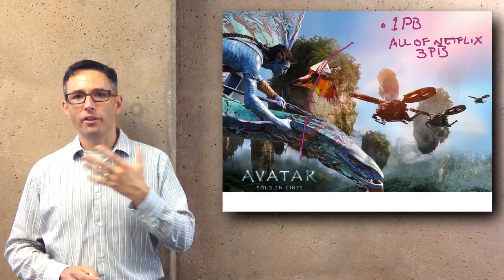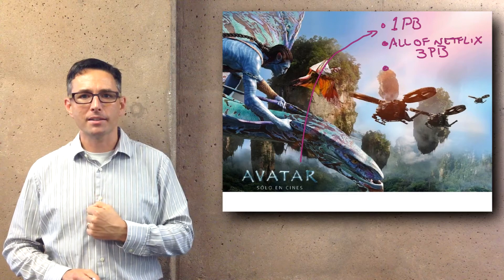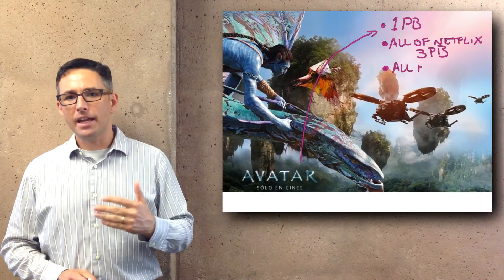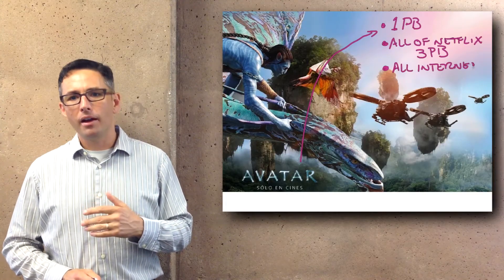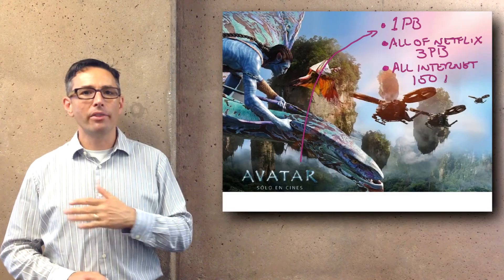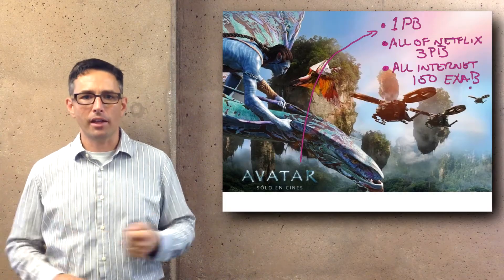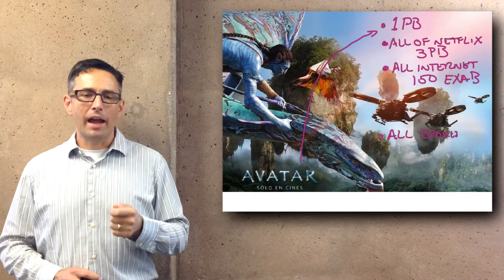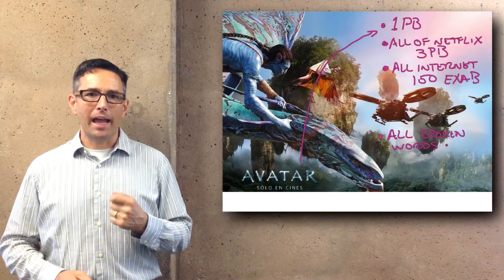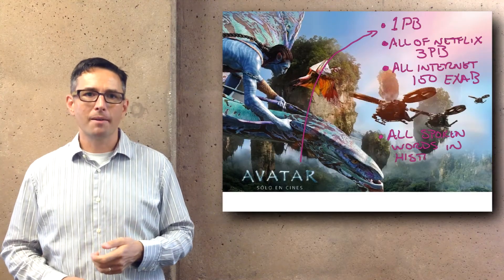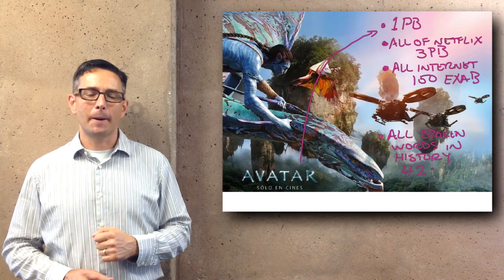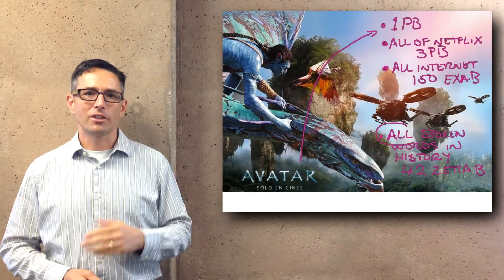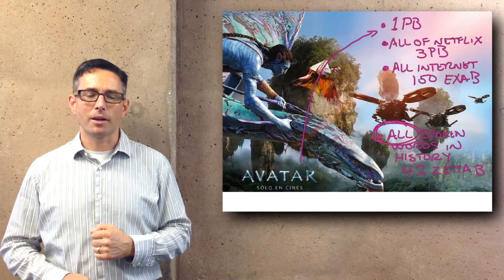This is the movies you're going to watch, as opposed to all the digital models that were in Avatar — so 3 petabytes. Going up to exabytes, that's roughly the amount of data that the Internet transmits every month. In one month over the entire planet, about 150 exabytes of data are moved around the Internet. And if you wanted to know how big a zettabyte is — if you recorded every single word ever spoken by any person on the planet in all of history at about 16 kilobytes fidelity, it would take about 42 zettabytes to store all of those conversations.